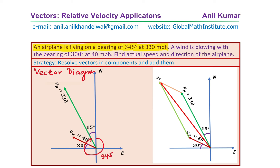What remains is 15 degrees from the north, so that becomes the direction for the plane. The magnitude is written along the line which shows the vector, so the length of this vector is represented by the magnitude, which is 330 miles per hour. Similarly, we can represent the wind on the same diagram. Wind is blowing with a bearing of 300 degrees at 40 miles per hour — that is wind vector VW. When we say 300, it means 270 plus 30, and that is how we get an angle of 30 degrees above the horizontal x-axis. So we have calculated the angles right there.